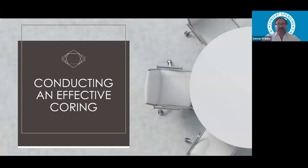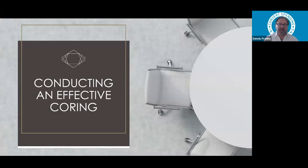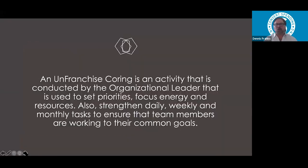Sometimes it's going to be the entire organization. Sometimes it's going to be specific parts of your organization. Other times it'll be individuals that you'll need to conduct effective corings. In going through this whole process tonight, I wanted to simplify it the best I could — to define what a coring actually is, its purpose, take you through a couple examples, finish up with some summary points, and answer some questions. So let's get started and talk about conducting an effective coring.